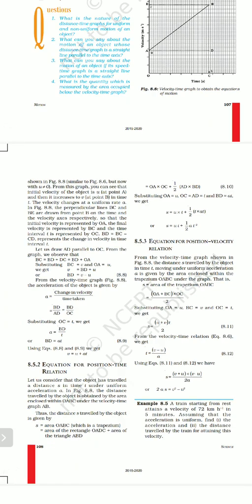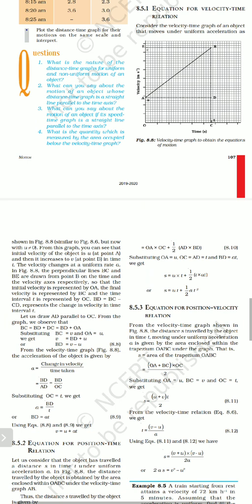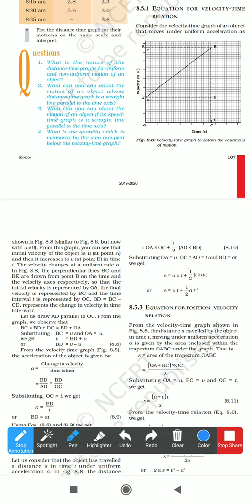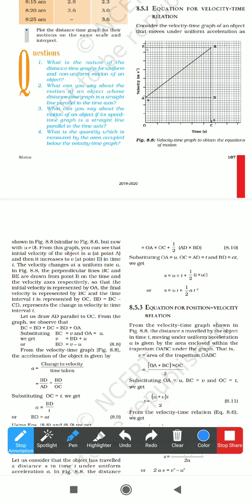From the graph, the initial velocity of the object is u at point A. Perpendicular lines BC and BD are drawn. BD represents the change in velocity. Since OE represents v and OA represents u, the change in velocity is v minus u.